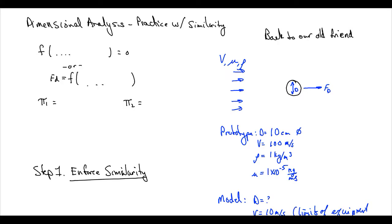We learned about Buckingham Pi Theorem last lecture and how to find the pi groups for these types of problems. The first thing we're going to do today is practice similarity, because the concept of similarity is much more important than actually finding the pi groups. It's rare that you'll need to find them yourself — most people have already done that for commonly encountered problems. Knowing how to enforce similarity allows you to use those pi groups that others have already found.